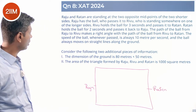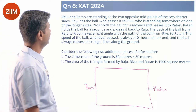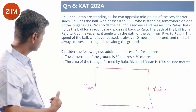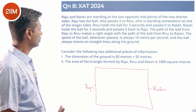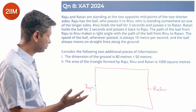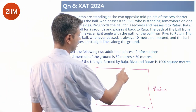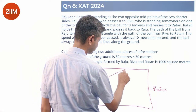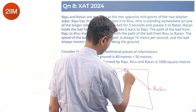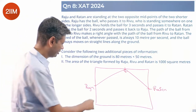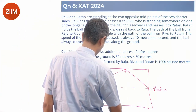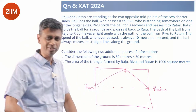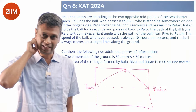Rivu is standing somewhere on one of the longer sides. Rivu holds it for three seconds and passes to Ratan; Ratan holds for two seconds and passes back to Raju. The path from Raju to Rivu makes a right angle with the path from Rivu to Ratan, so Rivu lies on the semicircle drawn over the diameter Raju–Ratan. Rivu is at one of the two intersection points with the longer side where that angle is 90 degrees.